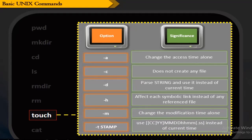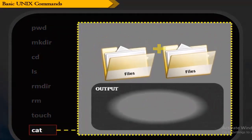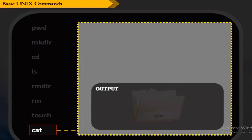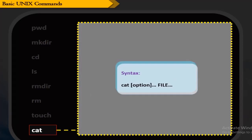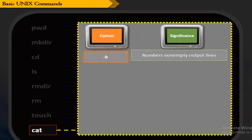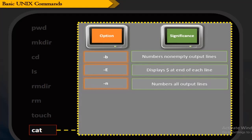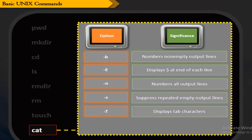The -t (stamp) option uses a given timestamp instead of the current time, used to change the timestamp of a new file to an old one. The cat command is used to concatenate files and print on the standard output, and can be used to display the content of a file or files. Options include: -b (number non-blank) numbers non-empty output lines; -e (show ends) displays a dollar sign at end of each line; -n (number) numbers all output lines; -s (squeeze blank) suppresses repeated empty output lines; -t (show tabs) displays tab characters; -v shows non-printing characters using caret and M notation except for LFD and tab.